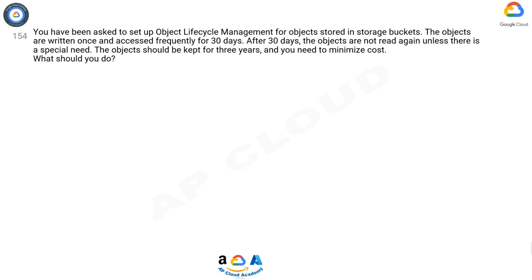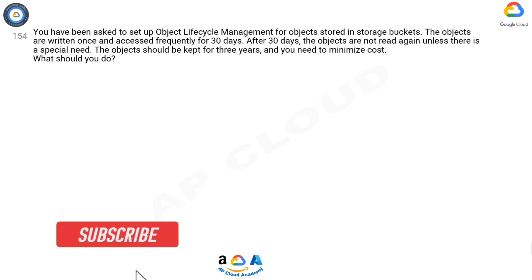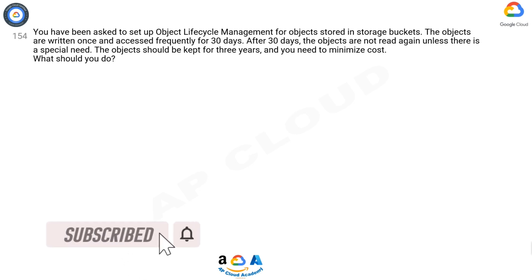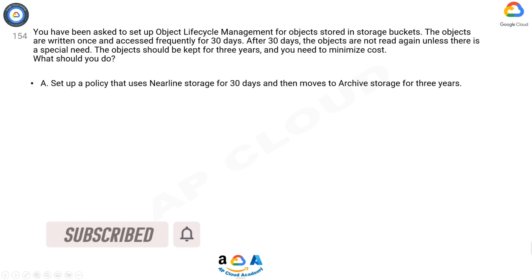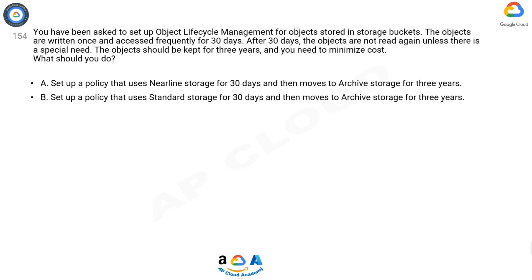Question 154. You have been asked to set up object lifecycle management for objects stored in storage buckets. The objects are written once and accessed frequently for 30 days. After 30 days, the objects are not read again unless there is a special need. The objects should be kept for three years and you need to minimize cost. Option A: set up a policy that uses nearline storage for 30 days and then moves to archive storage for three years.